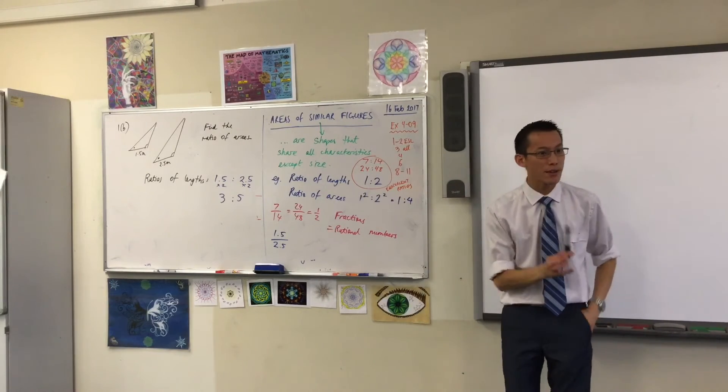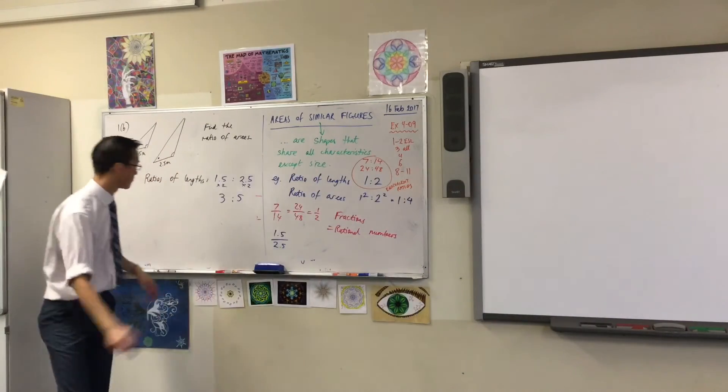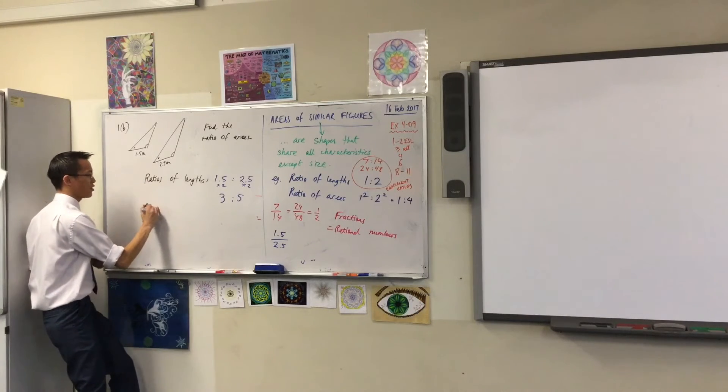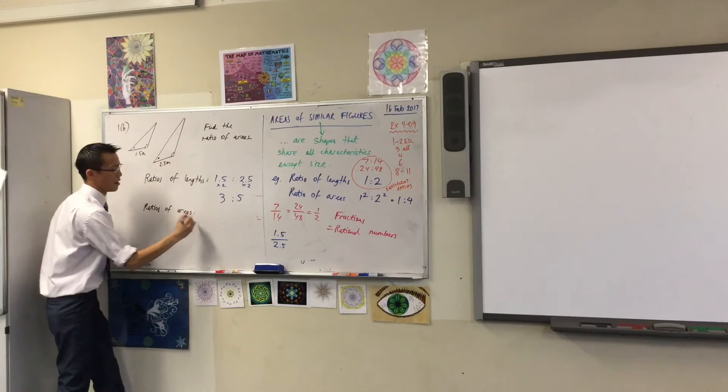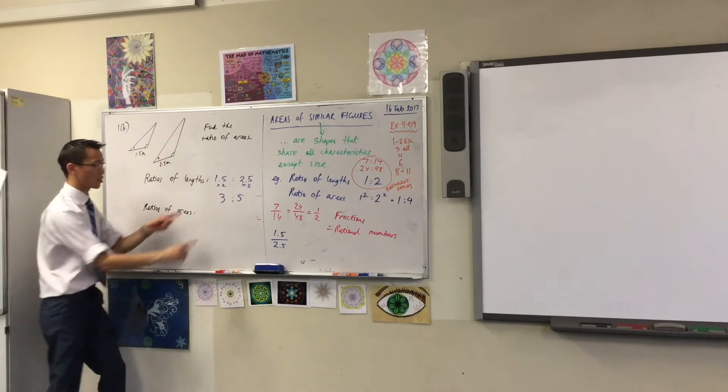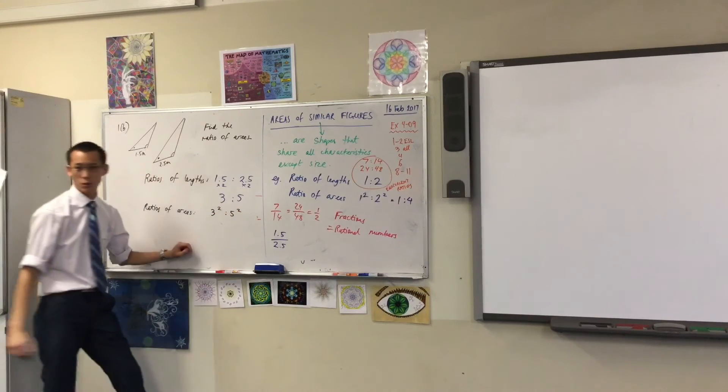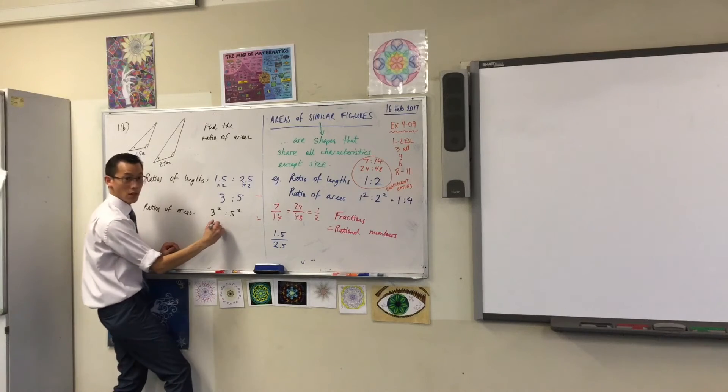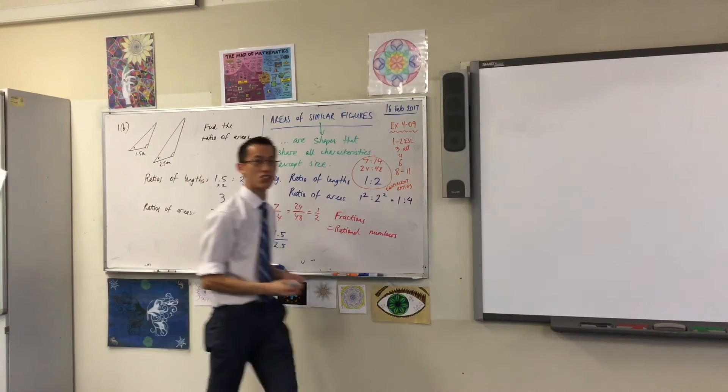In order to get to the ratios of the areas, what do I have to do to these guys? Have a look. I have to square, right? So I'm going to go ratios of areas. But importantly, I'm going to square both of these numbers. So it'll become 3 squared to 5 squared. 3 squared, of course, is 9. And 5 squared is 25. And that's the ratio of the areas.